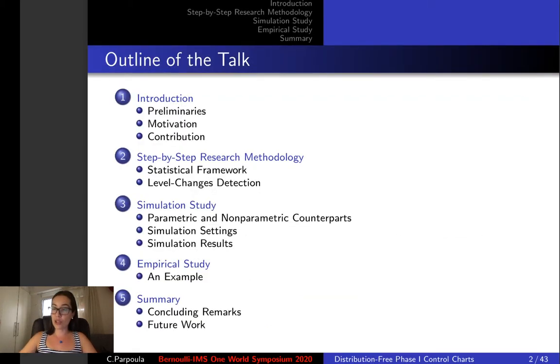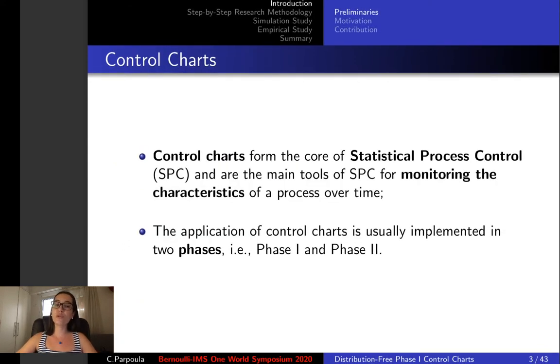This is the outline of the talk and let me discuss in brief the significance of control charts which form the core of statistical process control. The application of these control charts is usually implemented in two phases, phase one and phase two.